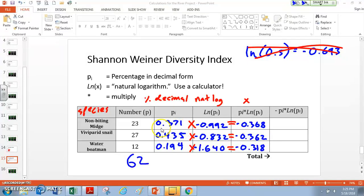So there we go. I just multiplied 0.371 times negative 0.992, and I got that number. I did the same thing all the way over. I just multiplied that by that, and I got this number. So now this column is filled up.